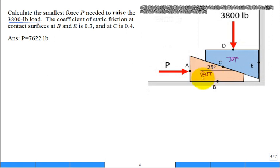They're fit where I have a floor and a wall. The coefficient of static friction at the contact surfaces B and E, so contact surface B is between the bottom wedge and the floor, and E is between the top wedge and the wall, has a coefficient of static friction of 0.3.